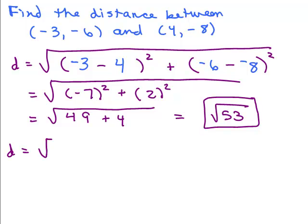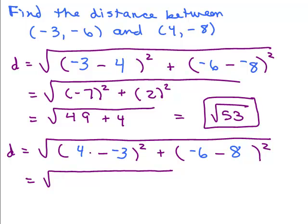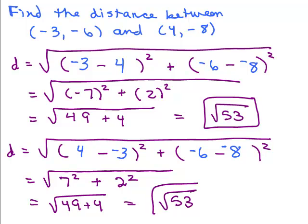Maybe you plugged the numbers in slightly differently. I'll show how I would have done it to get the same answer. I look at the x values and put the bigger x value first: 4 is bigger than negative 3. Between negative 6 and negative 8, negative 6 is bigger. So I have negative 6 minus negative 8, which is 2 squared. I still get 49 plus 4, which is the square root of 53.